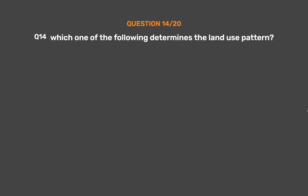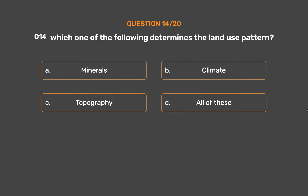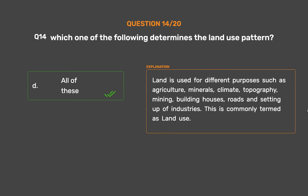Question No. 14. Which one of the following determines the land use pattern? Option A: Minerals. Option B: Climate. Option C: Topography. Option D: All of these. The correct answer is Option D: All of these. Land is used for different purposes such as agriculture, minerals, climate, topography, mining, building houses, roads and setting up of industries. This is commonly termed as land use.